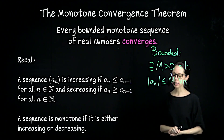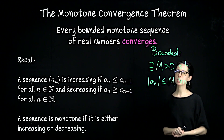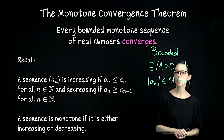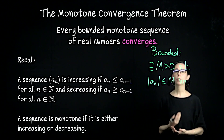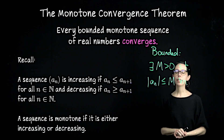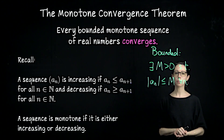We are going to look at the axiom of completeness first — this is an axiom about the real number system that we need for our proof. Then we will prove the monotone convergence theorem, and then I'll give an example of when it's useful.